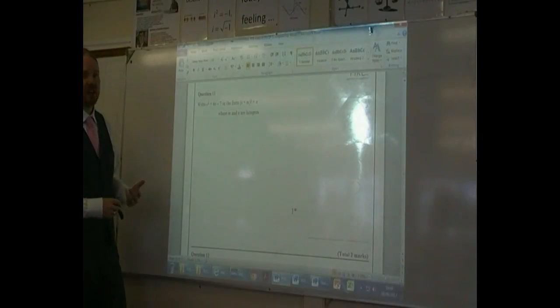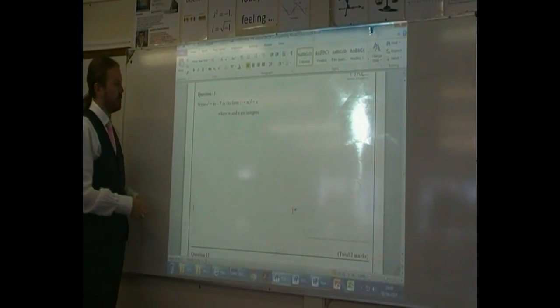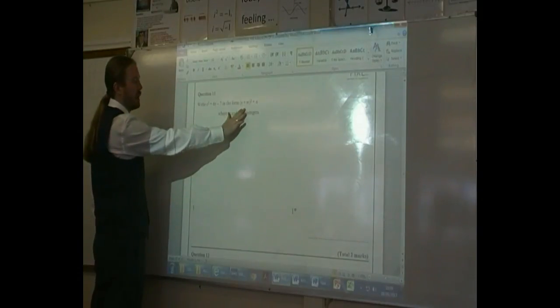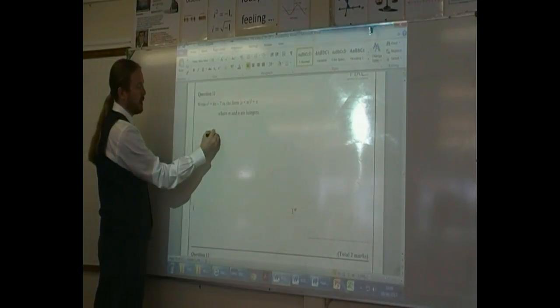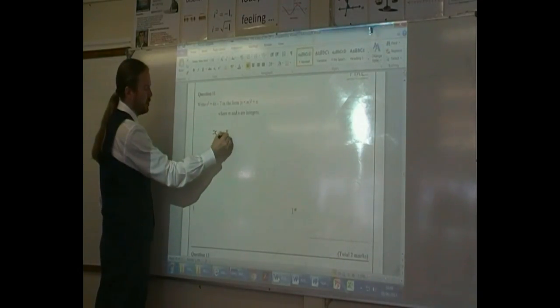Right, this is a completing the square question. So first thing we have to do is work out our bracket. And our bracket is going to be x and then half of the 4 is 2. So our bracket's going to be x plus 2.